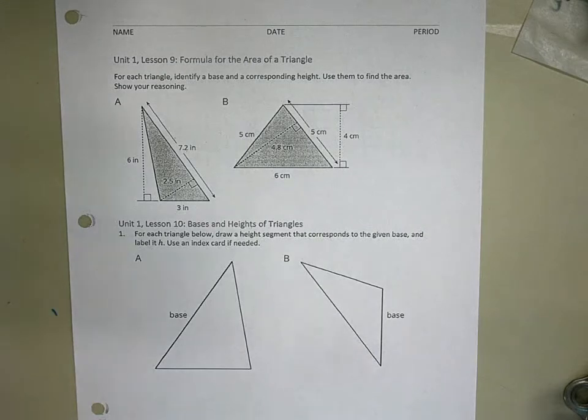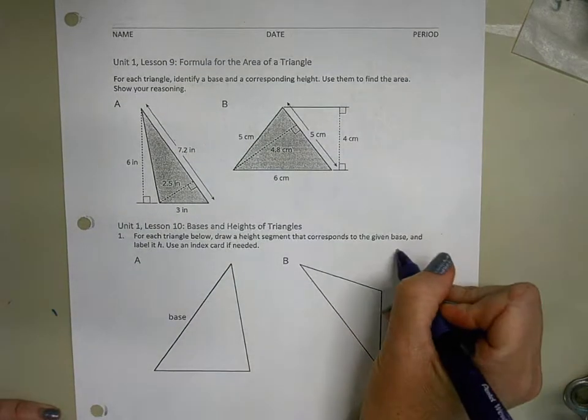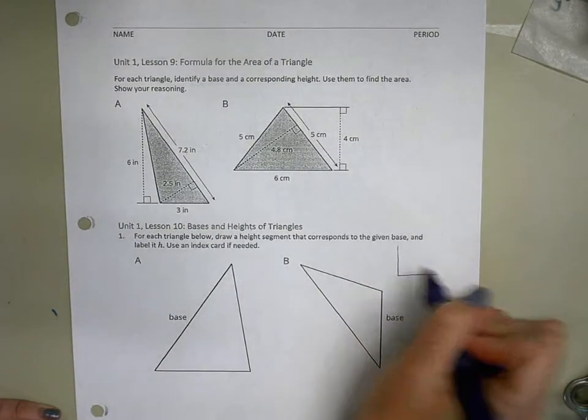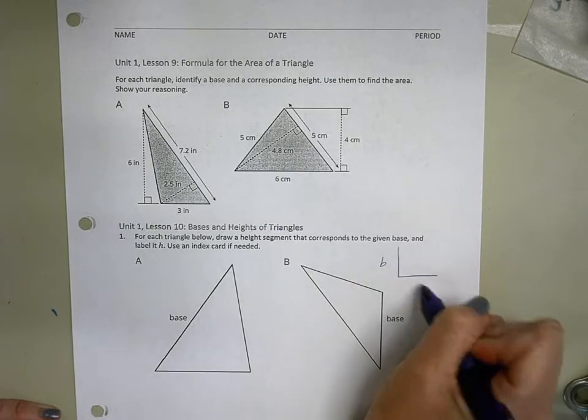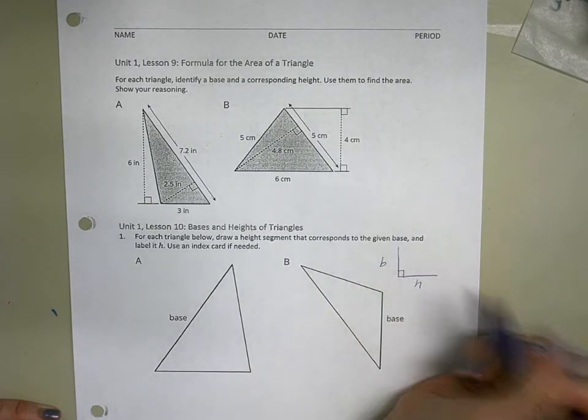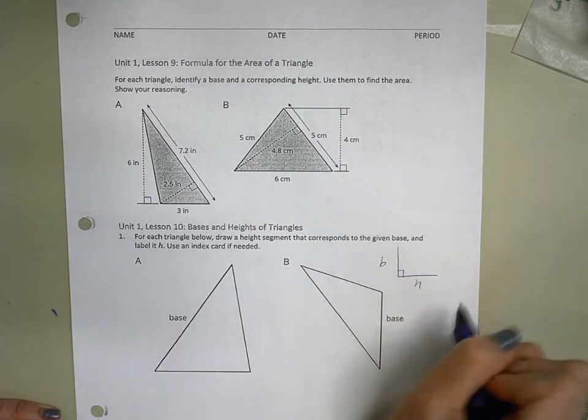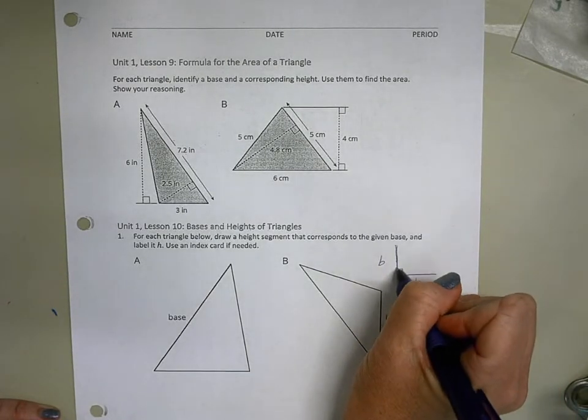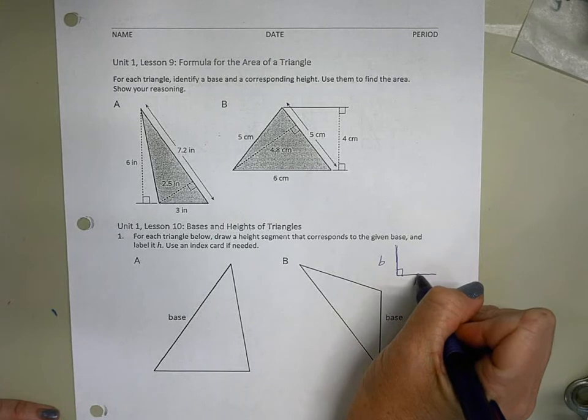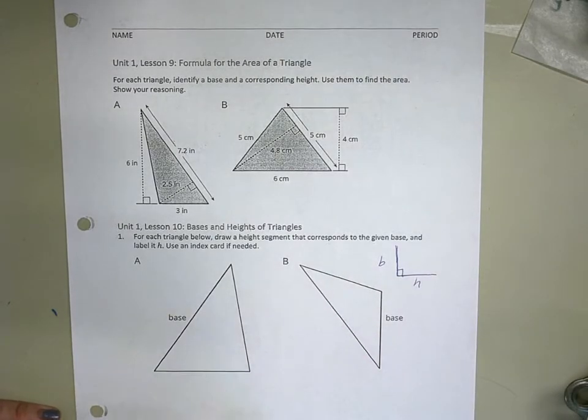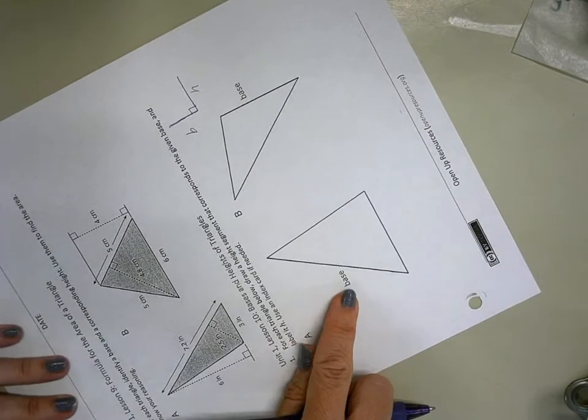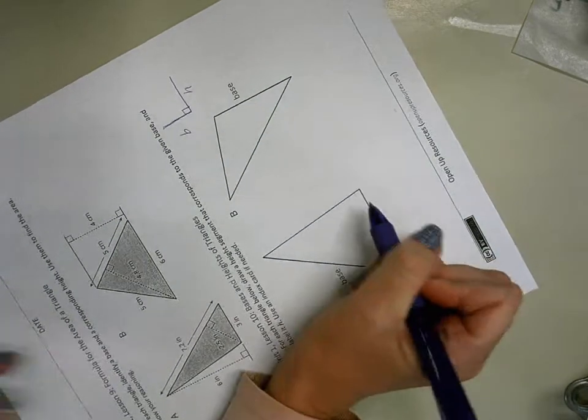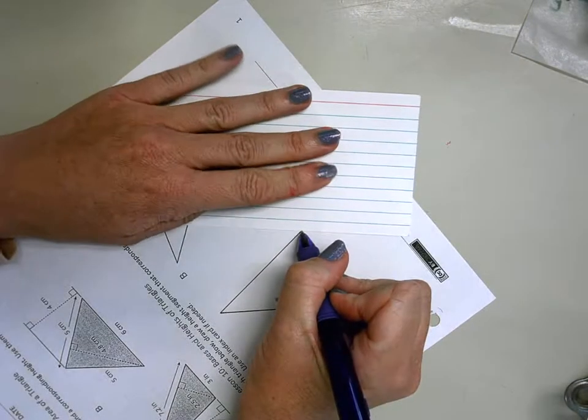We talked about that for a base and a height to be appropriate for a triangle, we do need to have them meet so they form a 90 degree angle. And maybe you have to extend the base or the height for them to meet, but you're looking for that 90 degree angle when they touch. And sometimes it helps if you rotate your paper. So here is my base, and we did practice with this in class earlier.